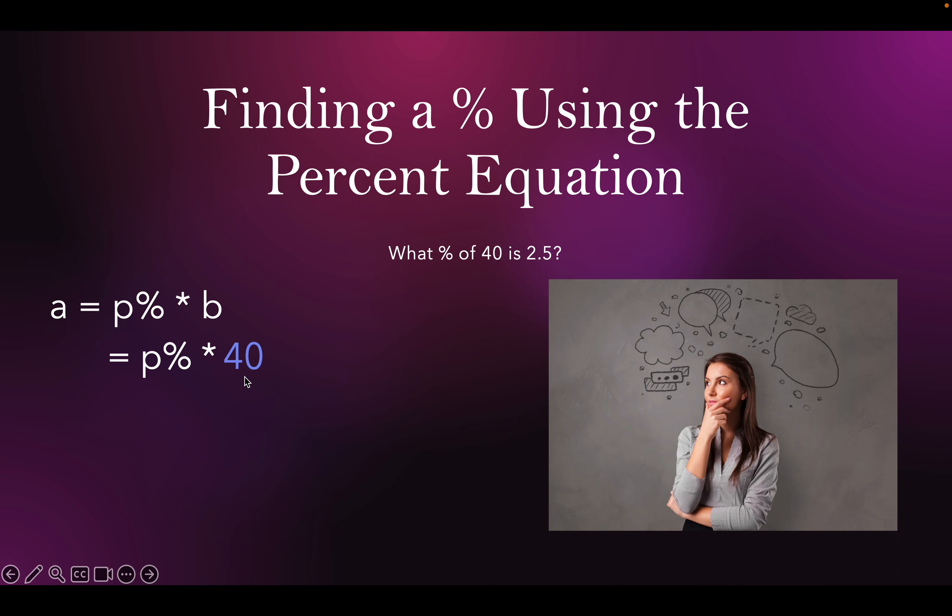Remember that 40 is the whole amount. That's the B number. 2.5 is just a part of it. So now I simply use my math here. I divide - this is a times problem. So I'm going to do the opposite. I'm going to divide by 40 to get rid of that 40.